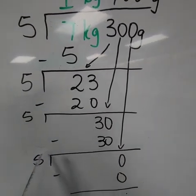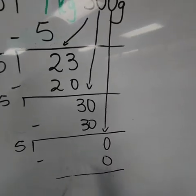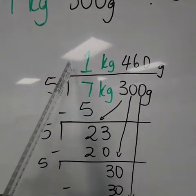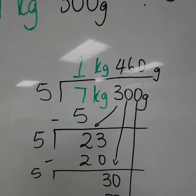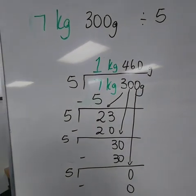0 multiplied by 5. Any number multiplied by 0 is 0. 0 minus 0 will give us a 0. And then there we go. So we have our answer of 1 kilogram, 460 grams.